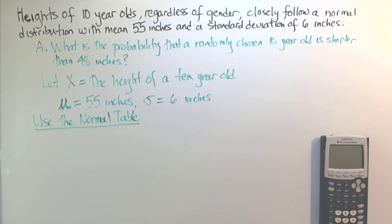So what are we asked to find? Well, we would like to find the probability that the height of a 10 year old is less than 48 inches. So that's our notation, and then we'll go through the steps to solve this problem.